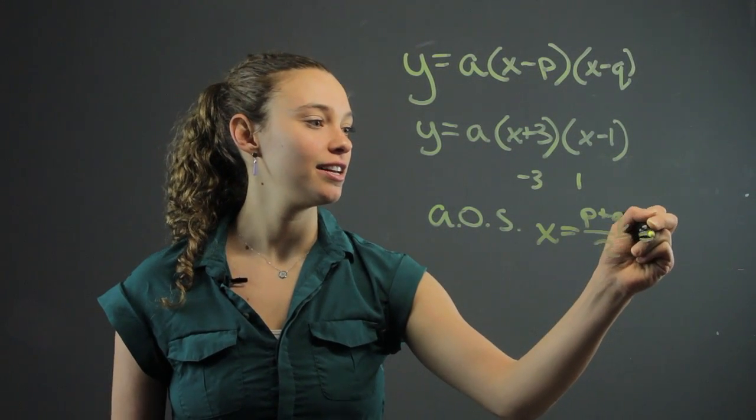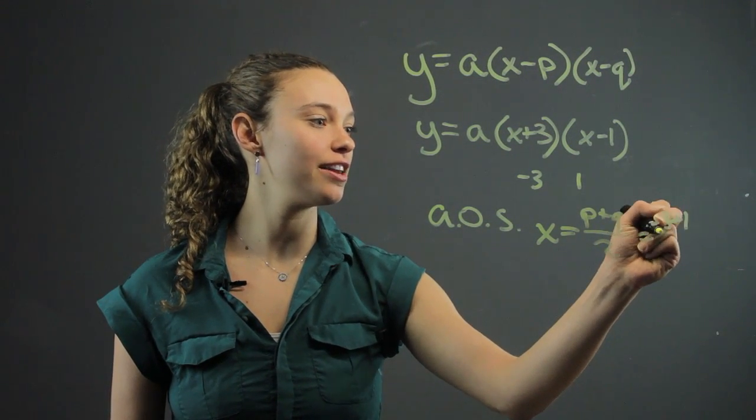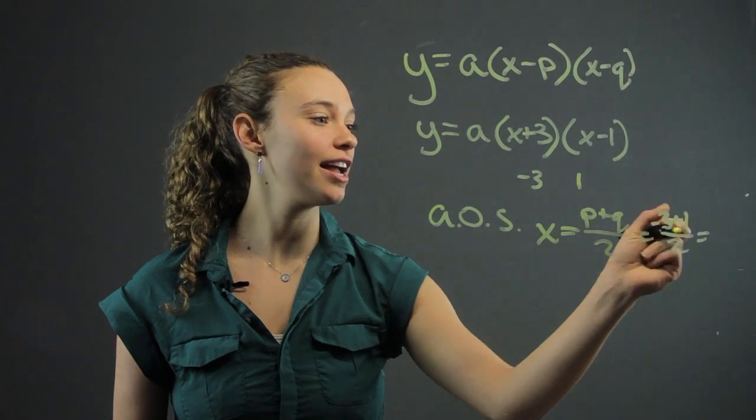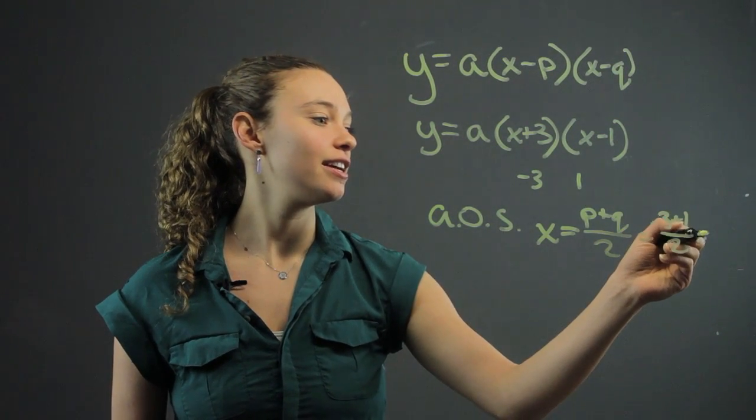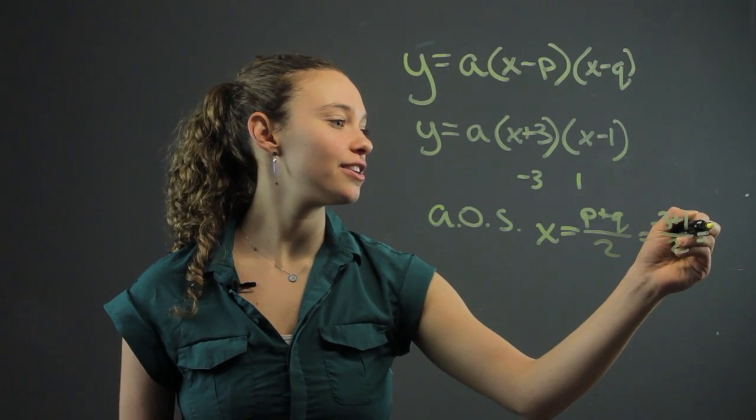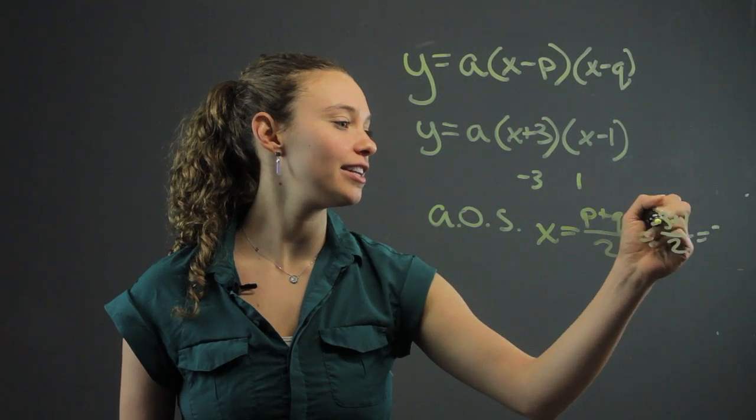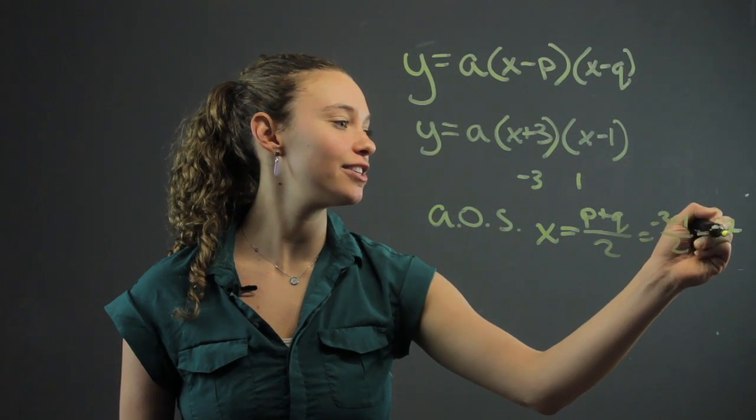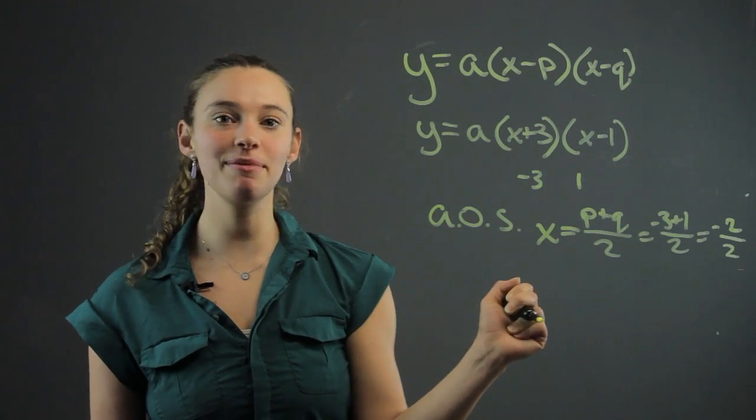So that's going to be negative 3 plus 1 over 2. So that's going to be negative 2. Negative 3 plus 1 is negative 2 over 2, so that's going to be negative 1.